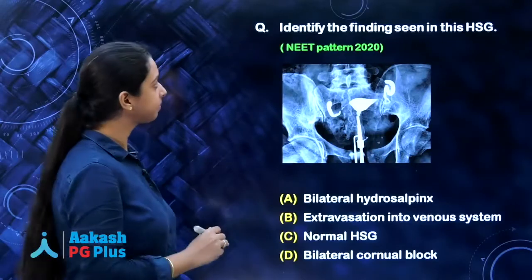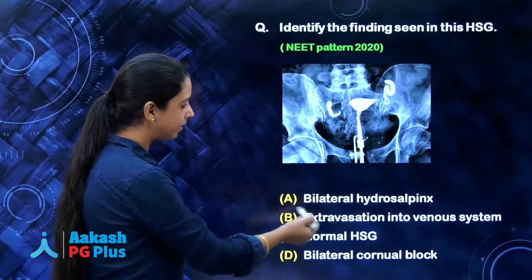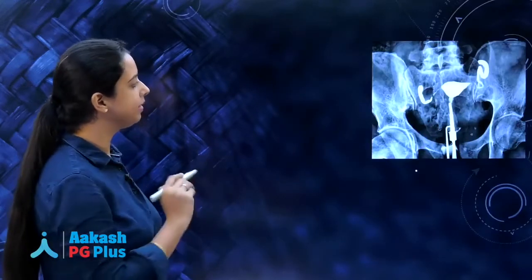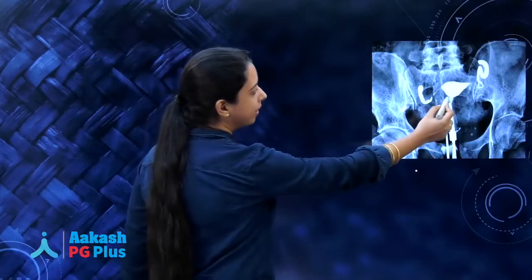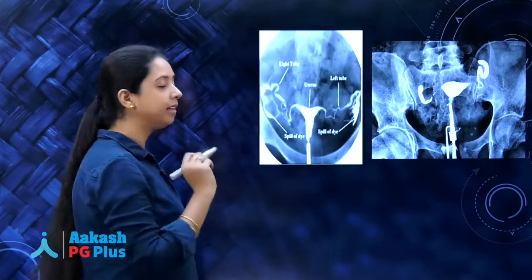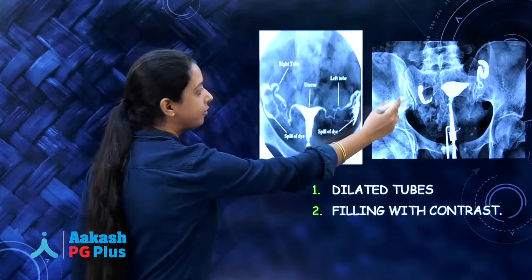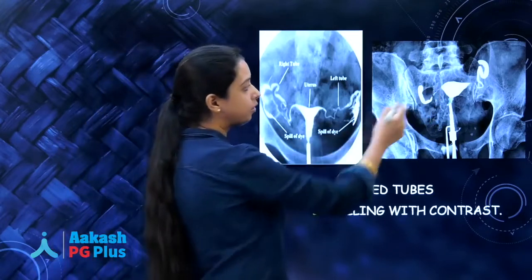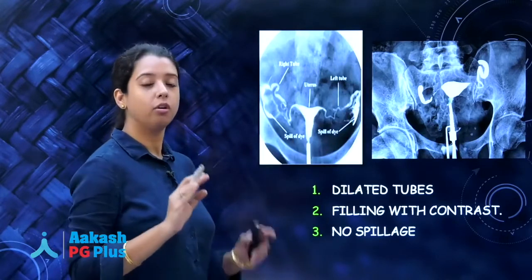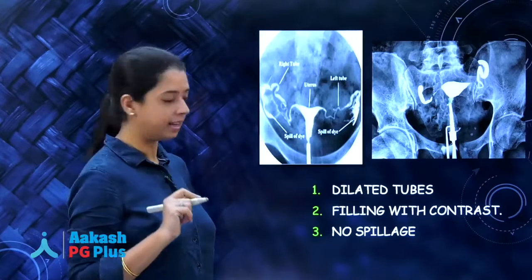Another question based on HSG: identify the finding seen in this HSG. Options are bilateral hydrosalpinx, extravasation into venous system, normal HSG, or bilateral cornual block. Reading this HSG, we can see one cannula, one cervix, and the uterine cavity appears more or less normal. The abnormality is in the tubes — they are definitely dilated. The contrast is able to enter inside the tube, meaning the cornua are normal, but there is no peritoneal spillage. The contrast is not leaving the tube, meaning there is a block at the fimbrial end. So this is a case of hydrosalpinx.